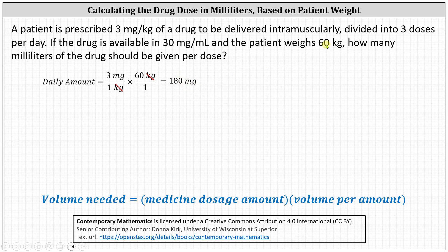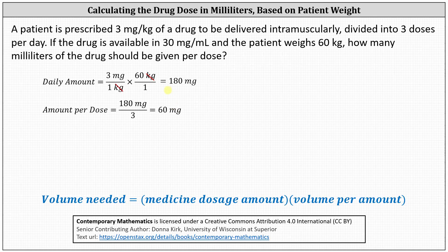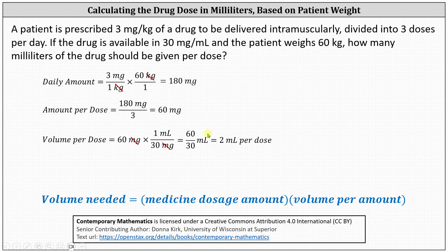Now let's determine the amount per dose. The total amount is divided into 3 doses per day, so the amount per dose is equal to 180 divided by 3 milligrams, or 60 milligrams. Finally, we can determine the volume needed per dose. Beginning with 60 milligrams, and because the drug is available in 30 milligrams per milliliter, we multiply by the rate of 1 milliliter per 30 milligrams. Notice milligrams simplify out, giving us 60 divided by 30 milliliters, or 2 milliliters per dose.